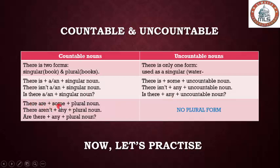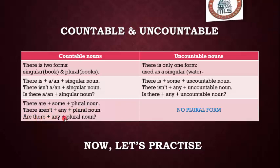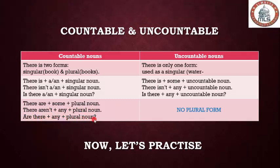Question form: 'Is there any' plus uncountable noun. For 'there are,' we use 'there are' plus 'some,' 'a lot of,' or 'many' plus plural noun. Negative form: 'there aren't any' plus plural noun. Interrogative: 'Are there any' plus plural noun. For example: 'There are some books,' 'There aren't any books,' 'Are there any books in the box?'